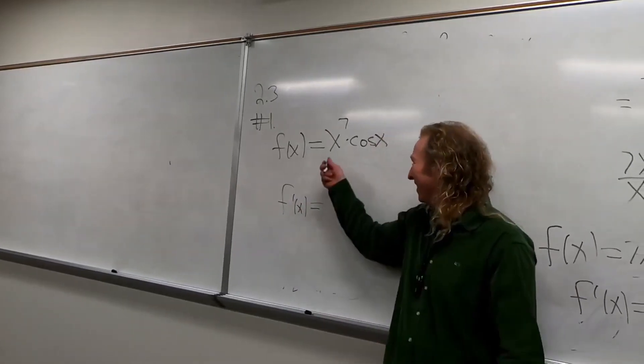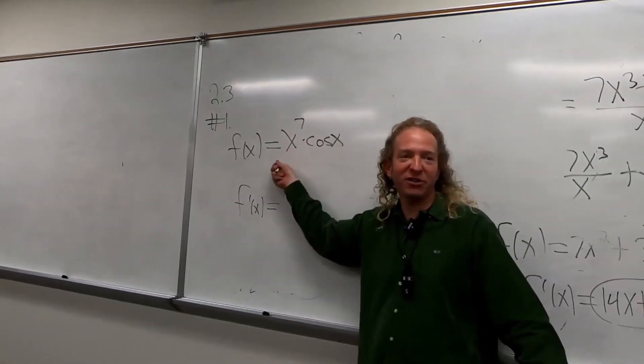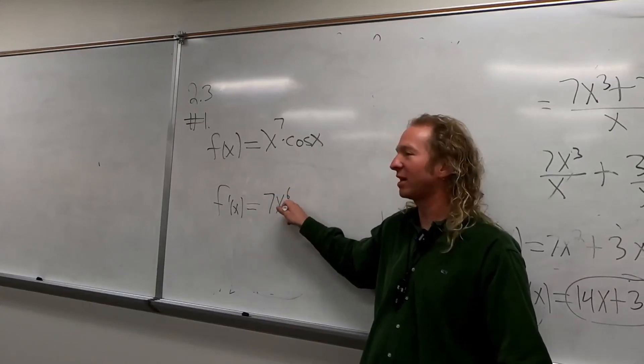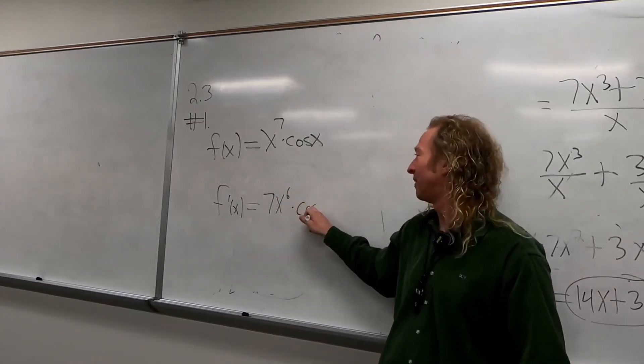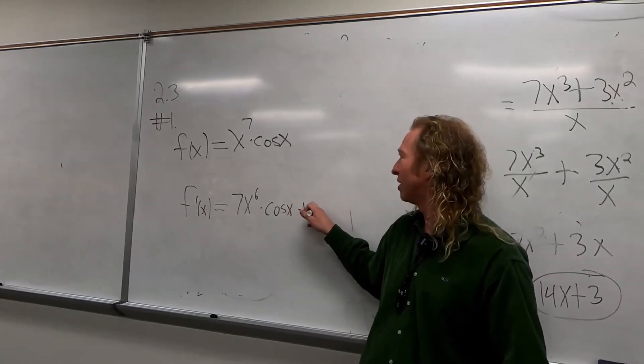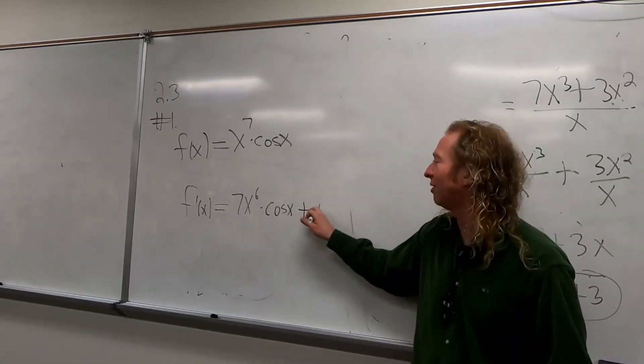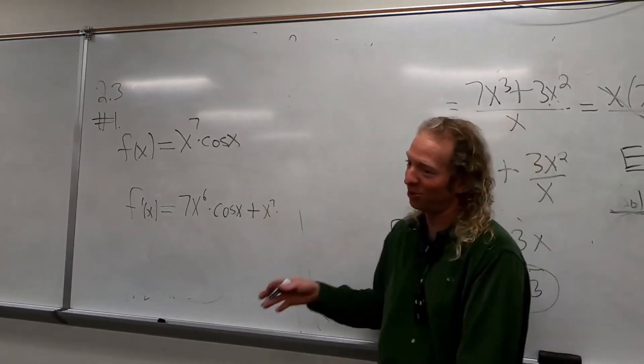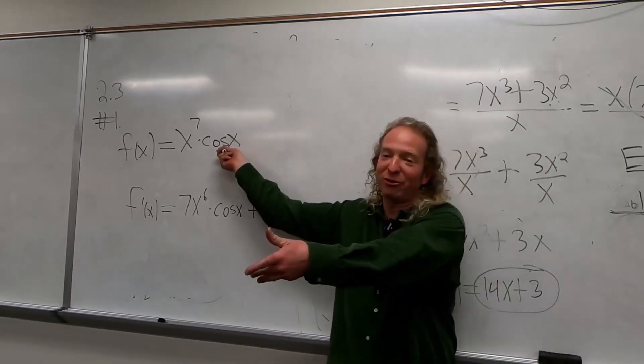Lights up and talks to you. Alright, so it's the derivative of the first times the second plus the first. It's negative sign. Yeah, but I'll show that step. But you can do it if you want to. Times, yeah, what's the derivative of cosine?